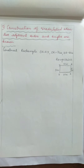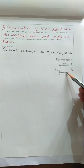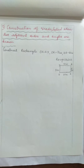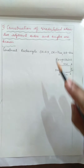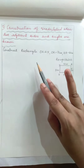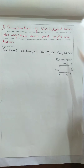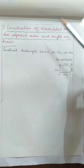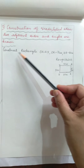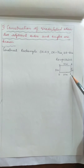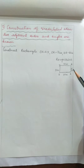We know that adjacent sides means two sides that have a common point, called adjacent sides. Based on this construction, we will construct one rectangle. Construct rectangle OKAY where OK is equal to 7 cm and KA is equal to 5 cm.